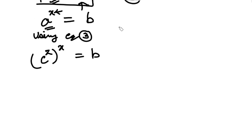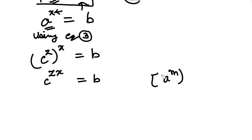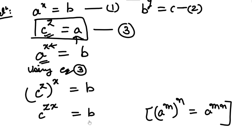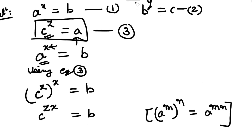Now, by the power law (third law of indices), if there is an index over an index, the indices multiply. So C raised to the power ZX equals B. The law states: A raised to the power M raised to the power N equals A raised to the power MN. Now, using the second relation, we can substitute the value of C in this.